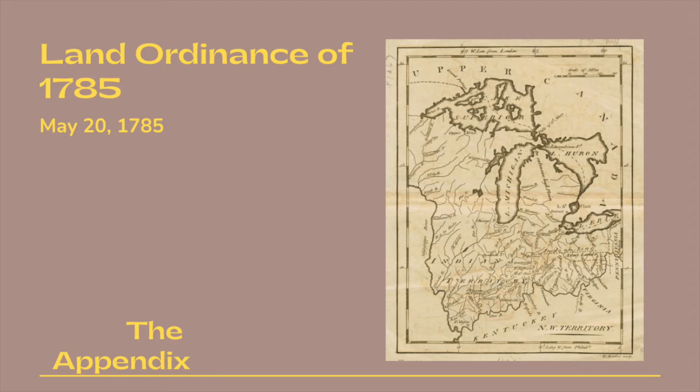The Geographer shall designate the townships or fractional parts of townships by numbers progressively from south to north, always beginning each range with number one, and the ranges shall be distinguished by their progressive numbers to the westward, the first range extending from the Ohio to the Lake Erie, being marked number one.